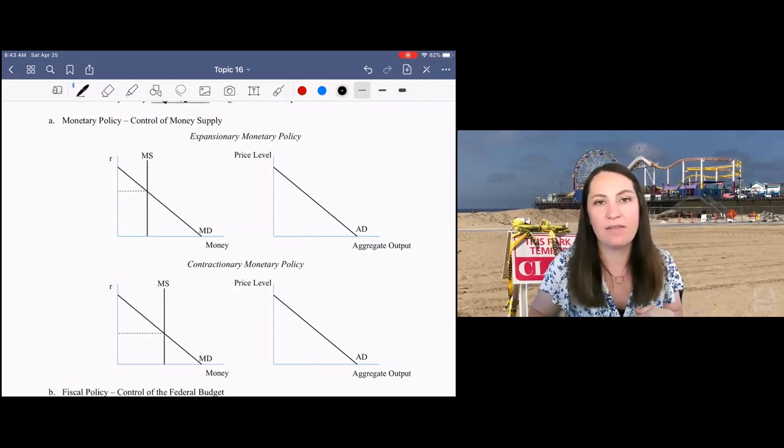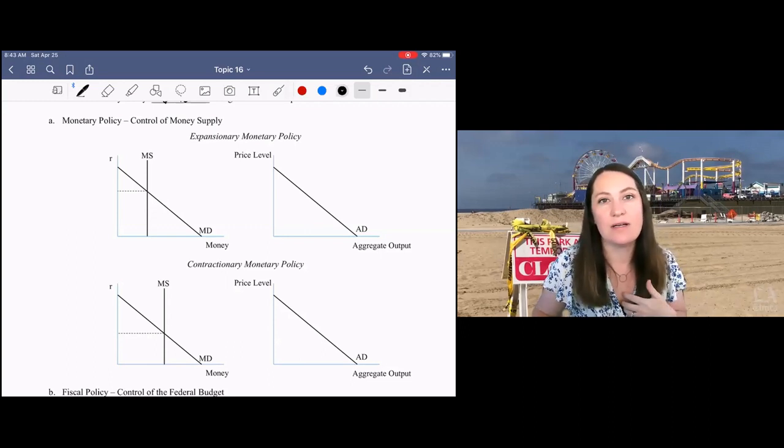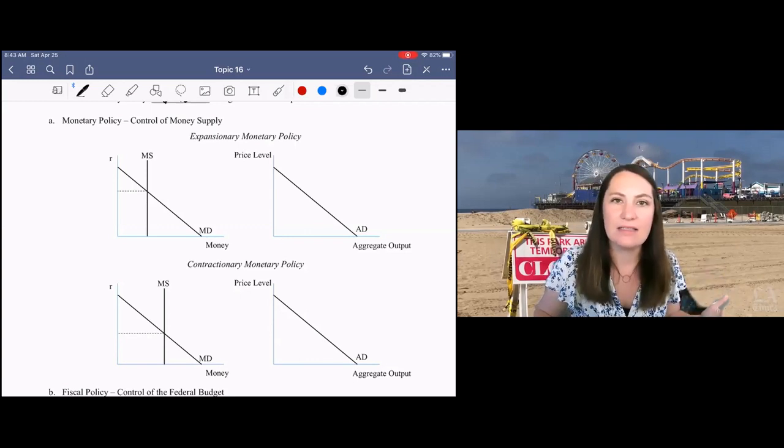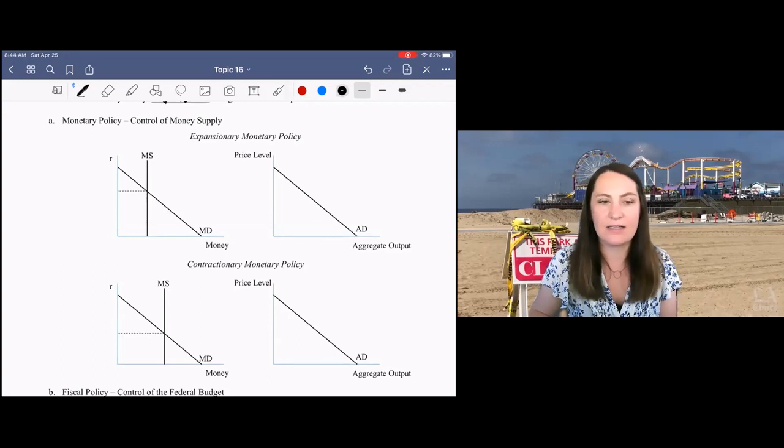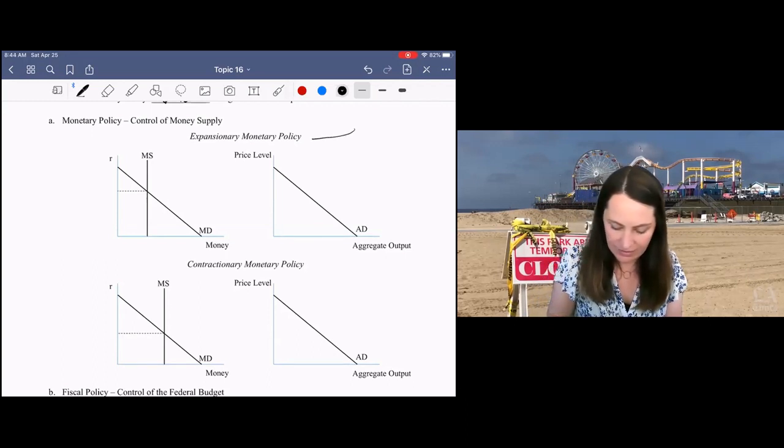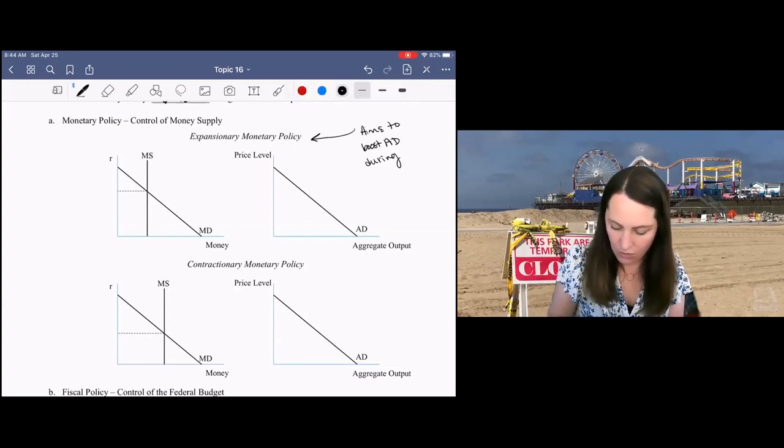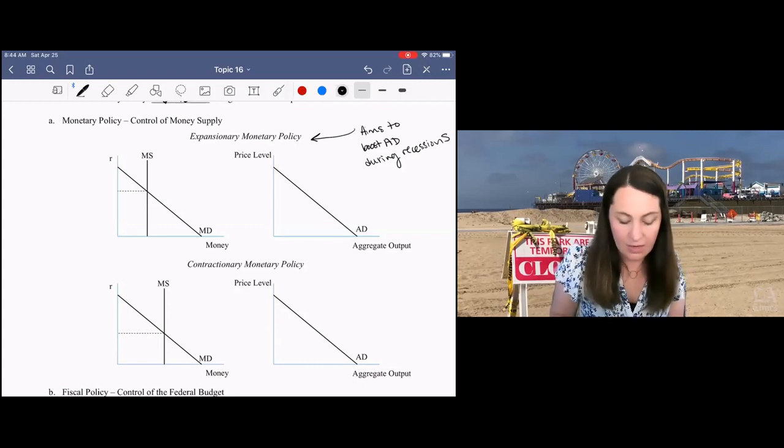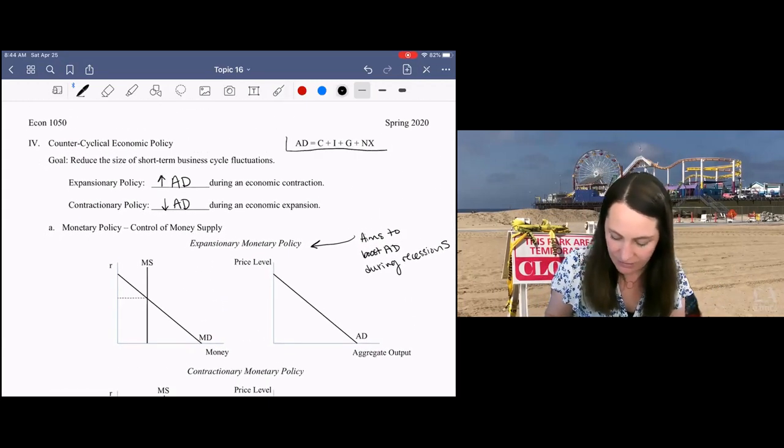Here, instead of having the Y-axis as the value of money or the price level, I've simply replaced it with the interest rate, which gives us a shortcut to understanding how money supply will affect aggregate demand. Let's go through an example of what expansionary monetary policy would look like. Remember, this aims to boost economic growth or boost aggregate demand during a time of economic contraction or recessions.